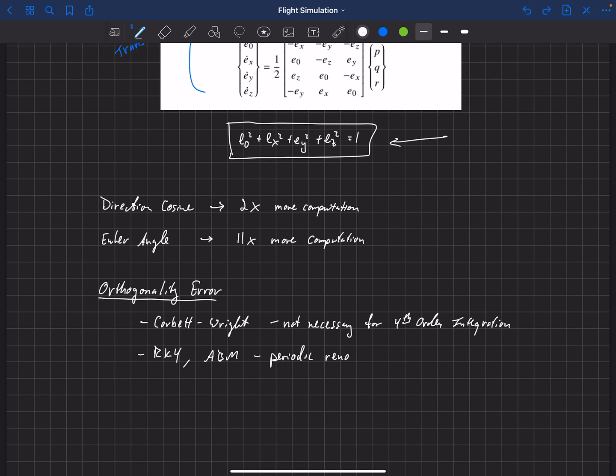You can apply that periodically. And in my simulations, I usually apply it after every full time step. So within RK4, we're going to take one time step, and at the end of that time step, I renormalize the quaternion. So you can apply that every time step or just periodically, every few time steps. And it's much less computationally expensive than the Corbett-Wright method and is just as effective at taking care of this orthogonality error.